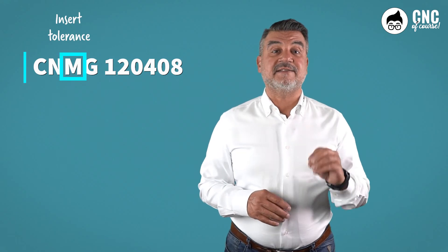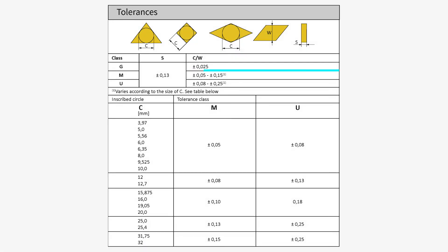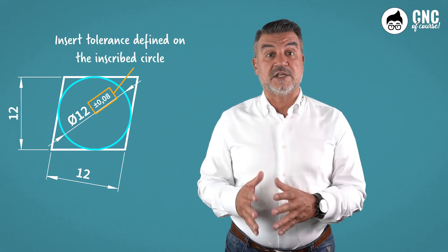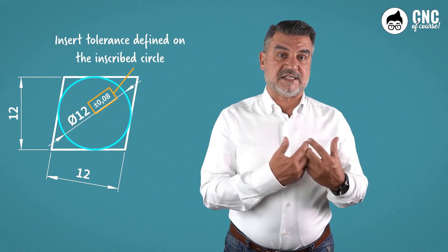Let's resume the coding of our example insert. We have arrived at the third letter, the letter M. This letter represents the tolerance class of the insert. All inserts, as well as all mechanical parts, have tolerances. But the insert tolerances are given on the circle within the figure. Ok Paolo, let's explain it better. Let's try to visualize the shape of an insert. Each shape is pretty much a geometrical figure. We have just seen a rhombus insert, a square one, and a triangular one. Well, inside each figure, we can draw a circle that, according to the size of the insert, will have a specific diameter. And it is precisely on the diameter of the circle that ISO uses the letter M to establish the tolerance class.